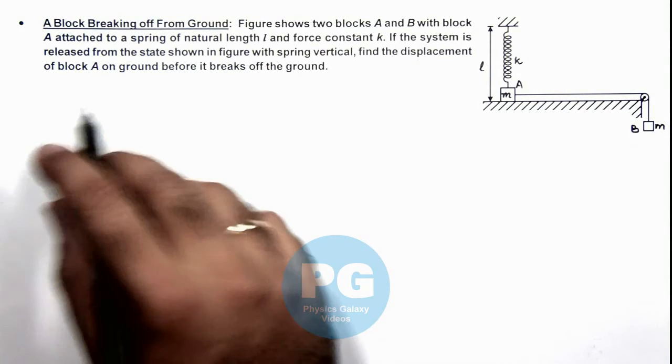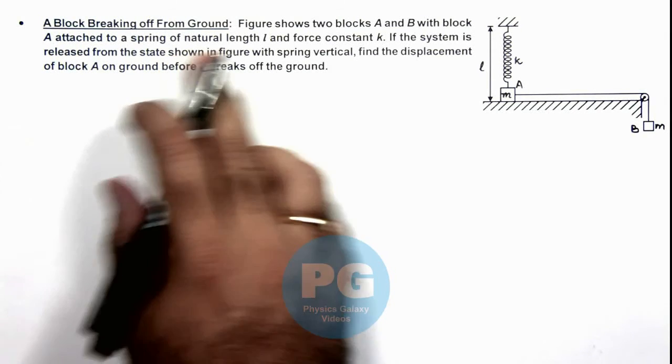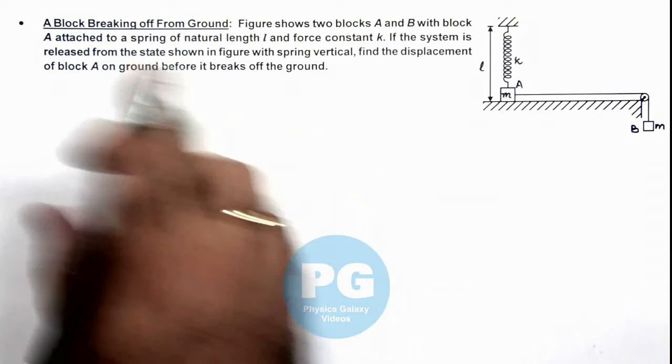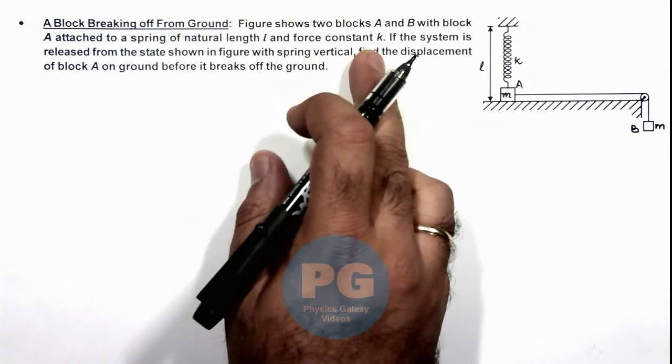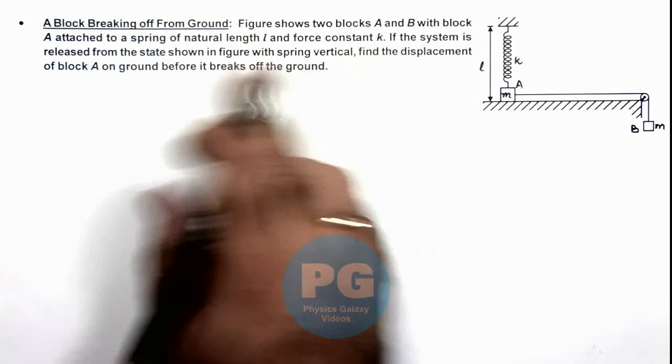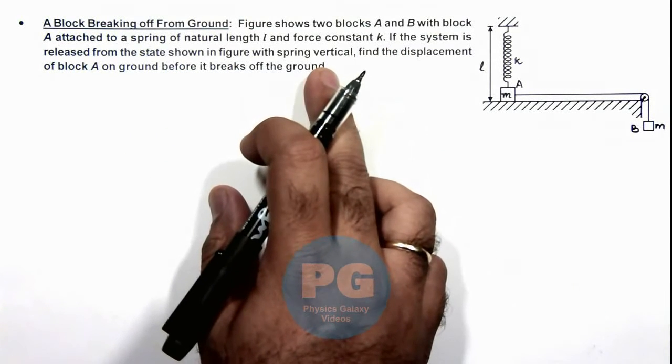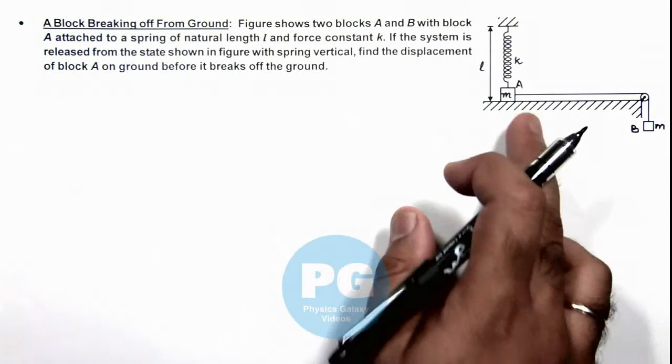This illustration is about an analysis of a block breaking off from ground. Here the figure shows two blocks A and B, with block A attached to a spring of natural length l and force constant k. If the system is released from the state shown in figure with spring vertical, we are required to find the displacement of block A on ground before it breaks off from the ground.